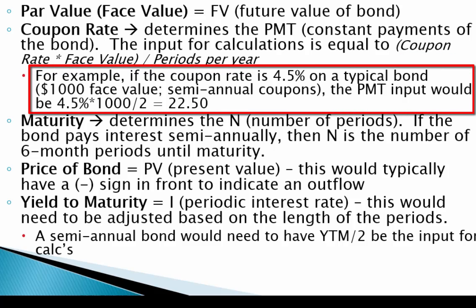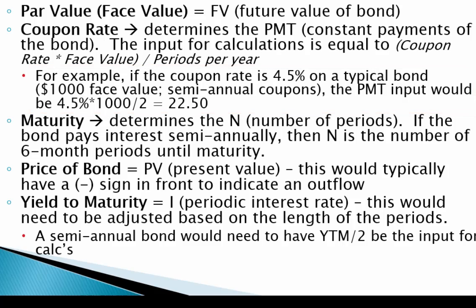A typical bond has a $1,000 face value and pays coupons semi-annually — assume that in the absence of other information. So if the coupon rate is 4.5%, the payment input is 4.5% of $1,000, which is $45, divided by two, giving $22.50 per period. The maturity determines the number of periods (N) — for a semi-annual bond, N is simply the number of years times two, which gives the number of six-month periods until maturity.